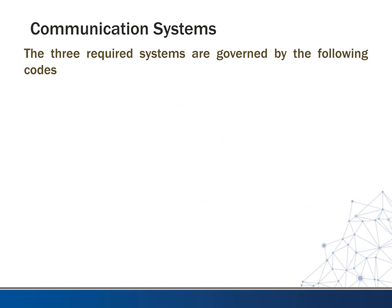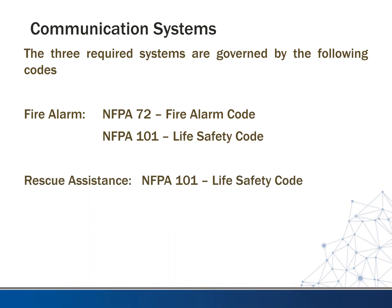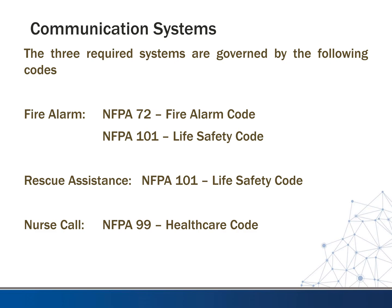The three required systems are governed by the following codes. You'll need familiarity with NFPA 72, which is the fire alarm code — remember the National Electrical Code is NFPA 70, so NFPA 72 is the fire alarm code. You might also utilize NFPA 101, the life safety code, which has language about strobe location and rescue assistance. Nurse call is covered in NFPA 99, the healthcare code.